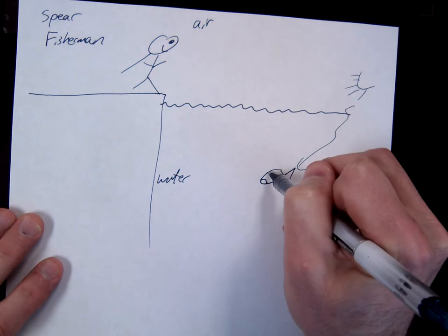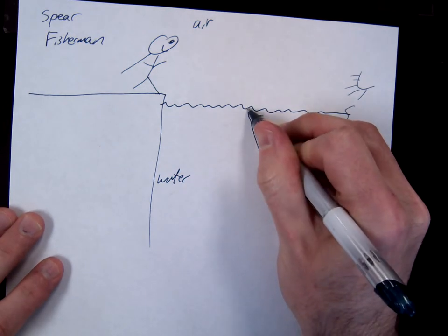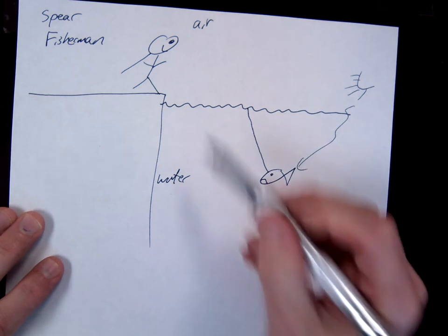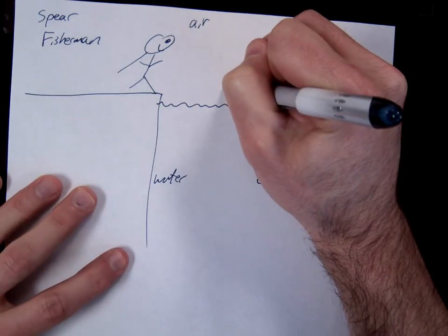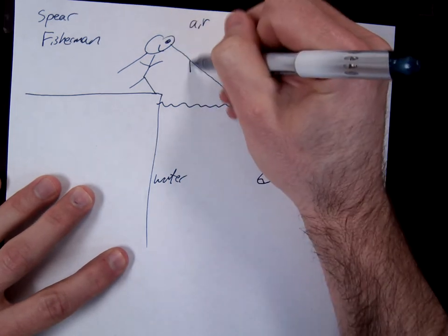So here's what happens. Light comes off the fish, like this. We're going from a high to low index, so the angle increases and goes into my eyes like this.